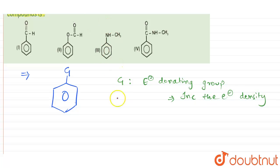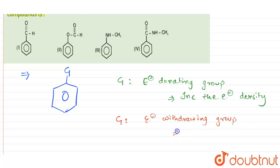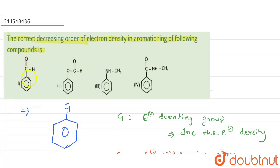And if that G group is an electron withdrawing group, what will happen in that case is it will pull electrons from the benzene ring towards itself, which will decrease the electron density of the benzene ring.